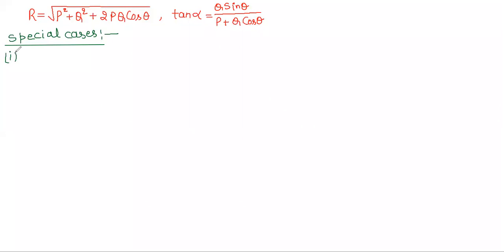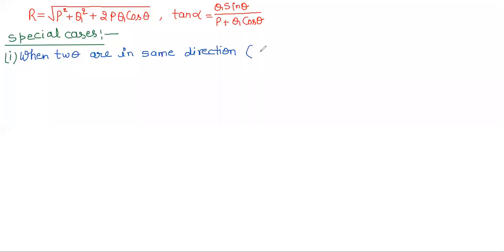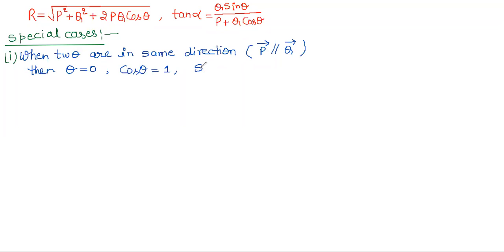First case: when two vectors are in the same direction — that means vector P is parallel to vector Q. If they are in the same direction, then theta is 0. If theta is 0, then cos theta equals cos 0, which is 1. And sin theta is 0.